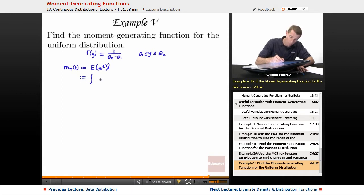It's the integral of the density function, f of y times whatever function you're trying to find the expected value of, in this case e to the ty, dy. And then you integrate that over your whole range for y, which in this case is theta 1 to theta 2.